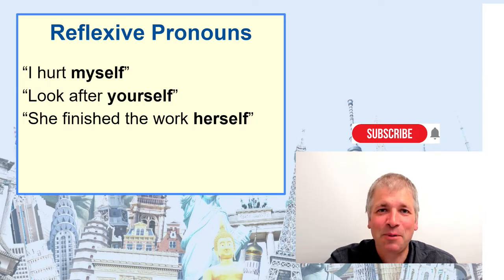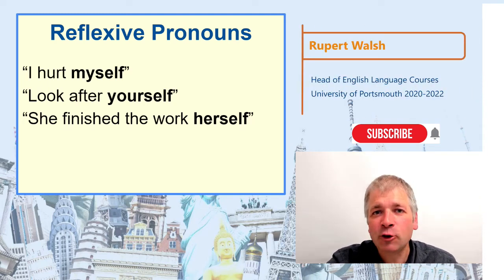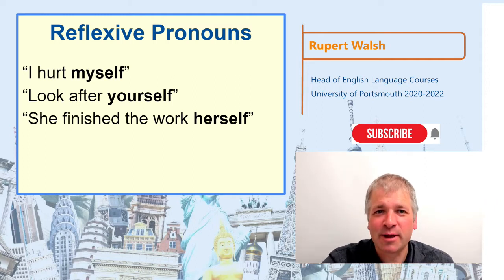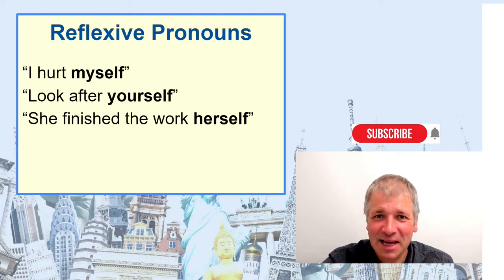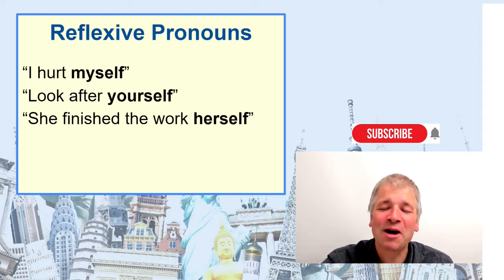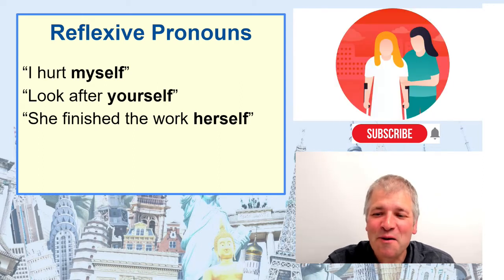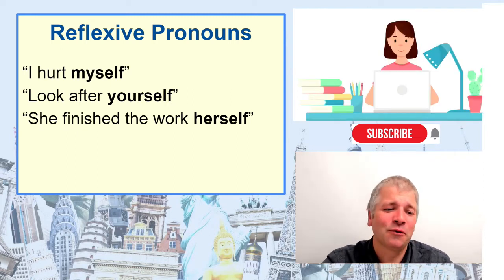Sometimes something happens to the person we're speaking about and we use a reflexive pronoun to show this. This video will teach you five important facts about using reflexive pronouns in English. Reflexive pronouns are words like 'myself' — for example, 'I hurt myself' — or 'yourself,' as in 'look after yourself,' or 'herself.'